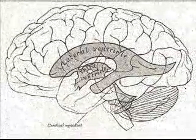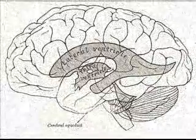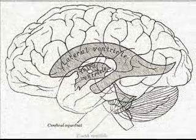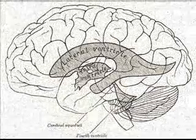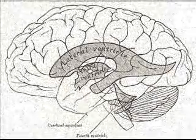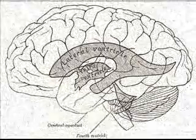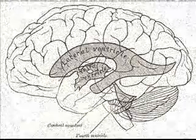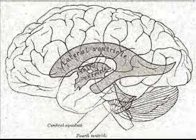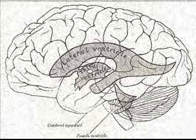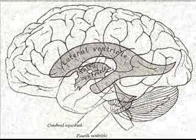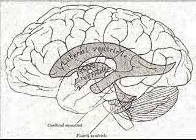Hi, I'm Dr. Dave. The fourth ventricle is one of the four connected fluid-filled cavities within the human brain. These cavities, known collectively as the ventricular system, consist of the left and right lateral ventricles, the third ventricle, and the fourth ventricle. The fourth ventricle extends from the cerebral aqueduct, aqueduct of Silvius, to the OBEX, and is filled with cerebrospinal fluid, CSF.